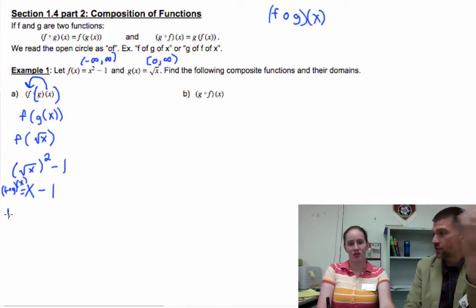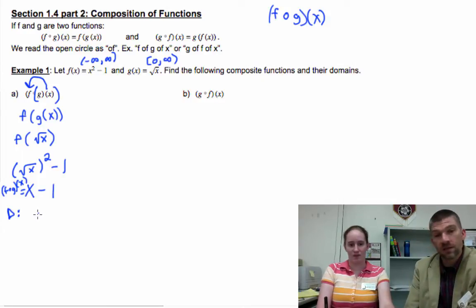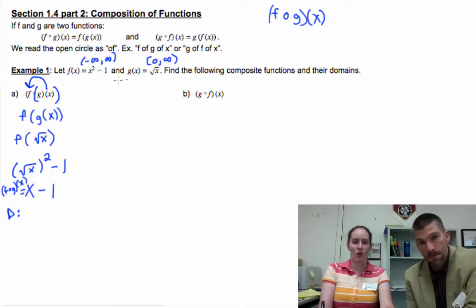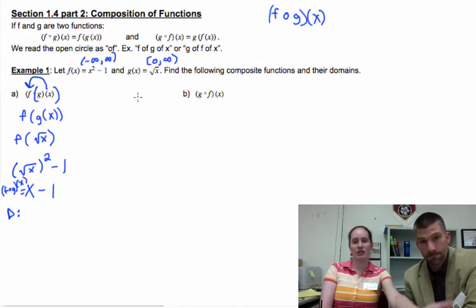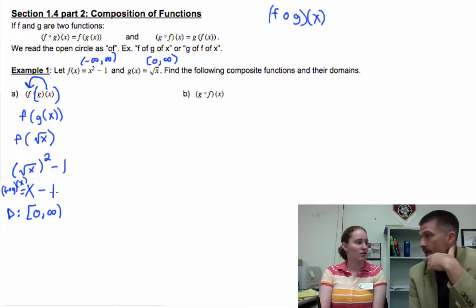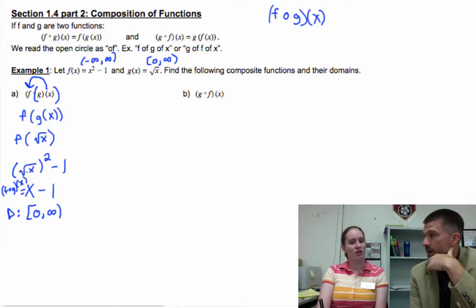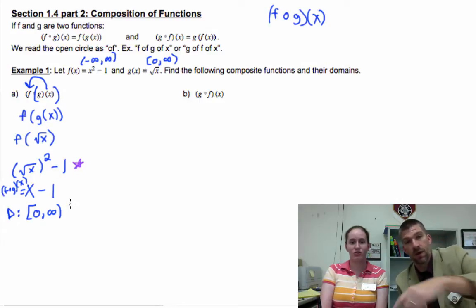Now, if you're not mathematically astute, you would go, oh, that domain is all real numbers. But it's not. That's a lie. Because what numbers were we only allowed to plug in? From zero to infinity. Because we're taking g and plugging it into f, we have to use g's domain.